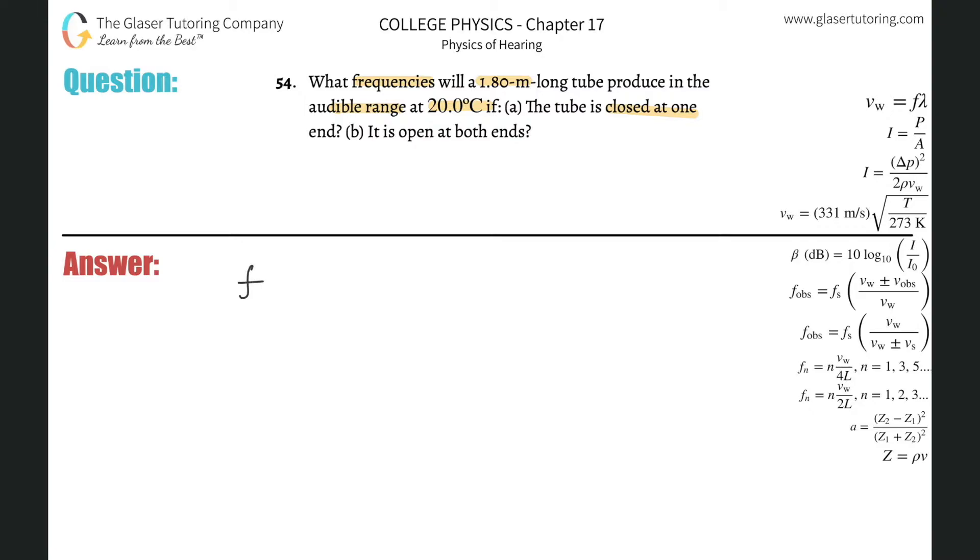We're going to use the formula that the frequency of the nth harmonic is equal to the nth harmonic multiplied by the velocity of that sound in air divided by 4 times the length of that tube, where the harmonics are n is equal to 1, 3, 5, 7. They're all odd.